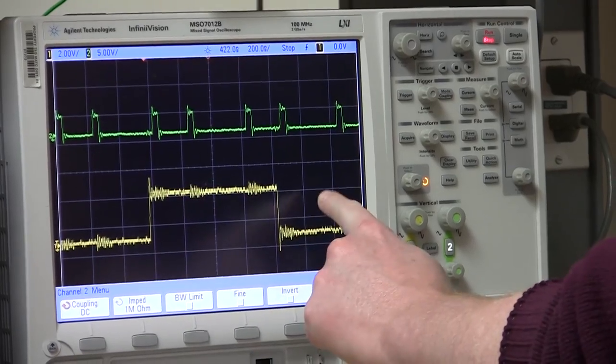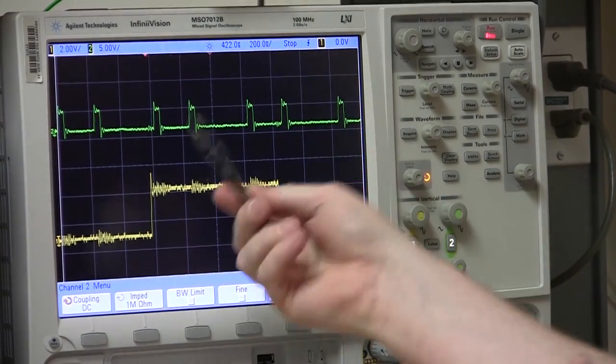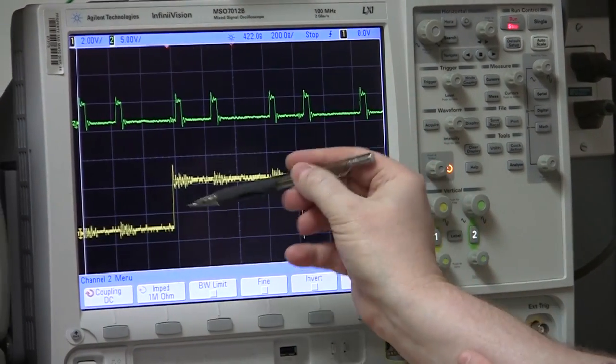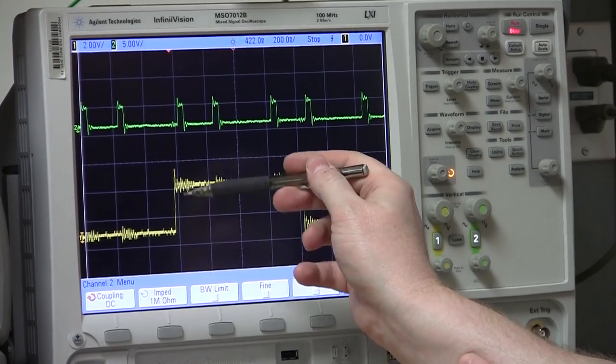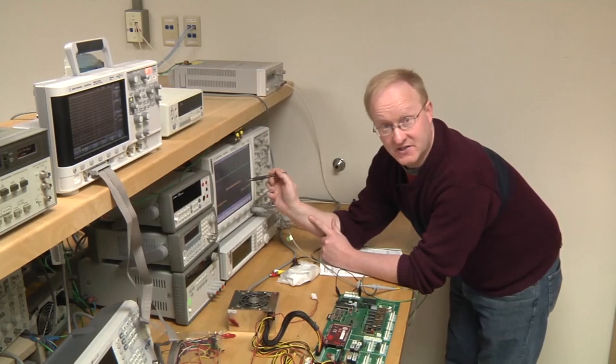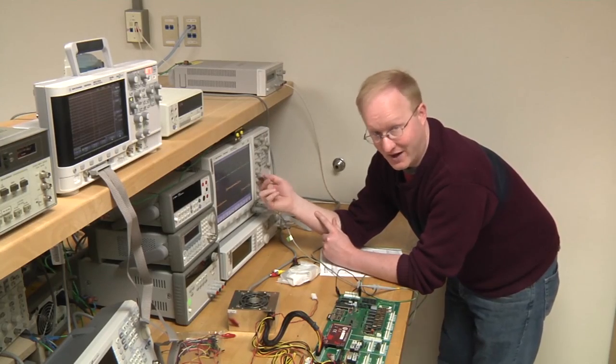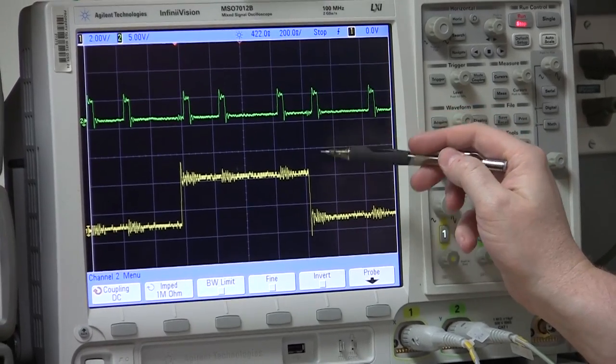Here is our actual pixel data. Here's our pixel clock. We can see that the data line is brought high while the pixel clock line is high. So what it's doing right here is it's clocking out one, two, three pixels of on data, basically ones. The pixels are on.